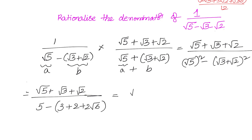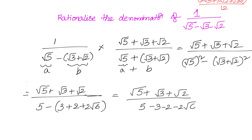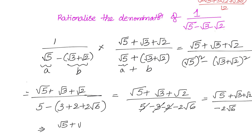Simplifying: (√5 + √3 + √2) divided by (5 − 3 − 2 − 2√6). Now 5 − 3 − 2 = 0, so we're left with (√5 + √3 + √2) divided by −2√6. To rationalize, we multiply numerator and denominator by √6 over √6.